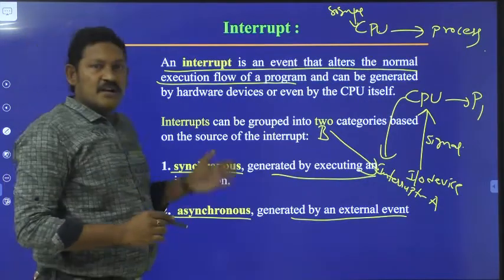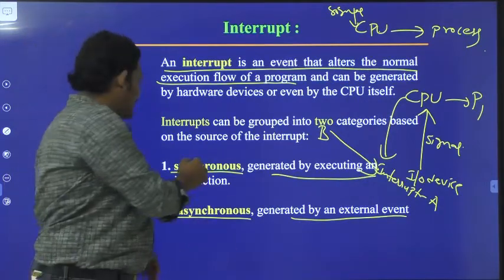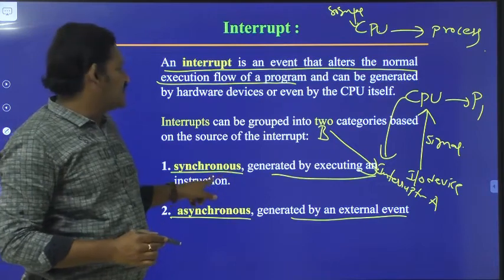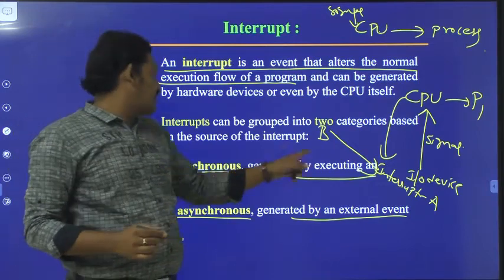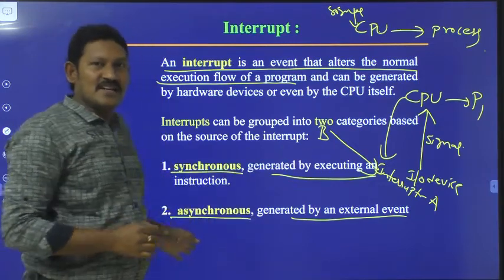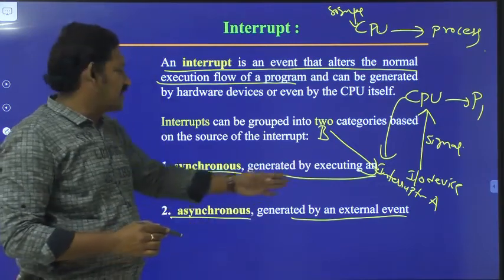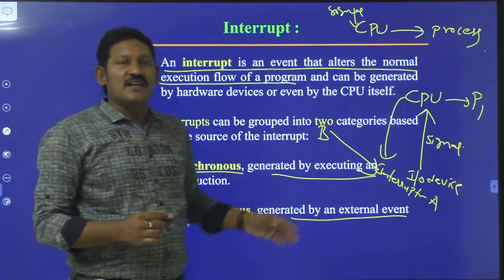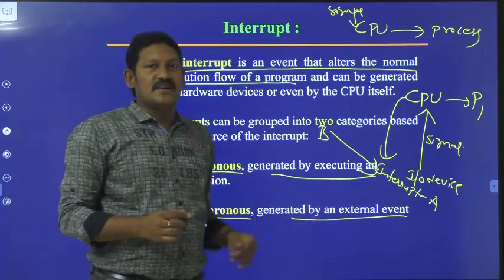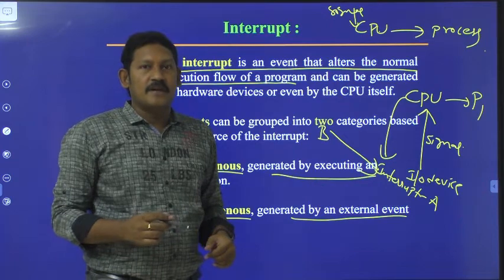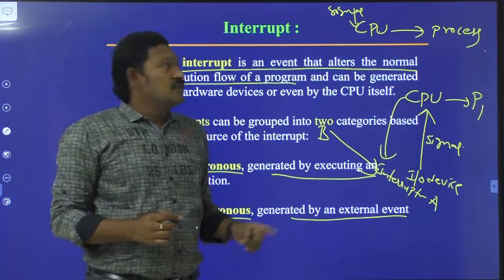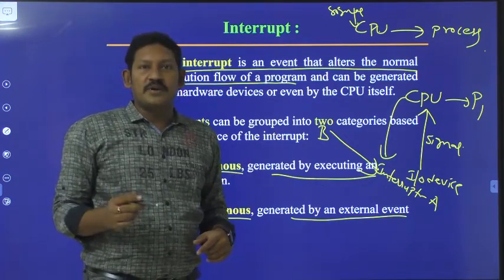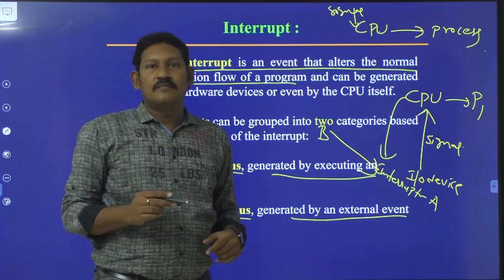So interrupts are of two types: synchronous interrupt, which is generated by executing an instruction, and asynchronous interrupt, which takes place due to an external event or external devices. With this we will wrap up the interrupt topic. Thank you.